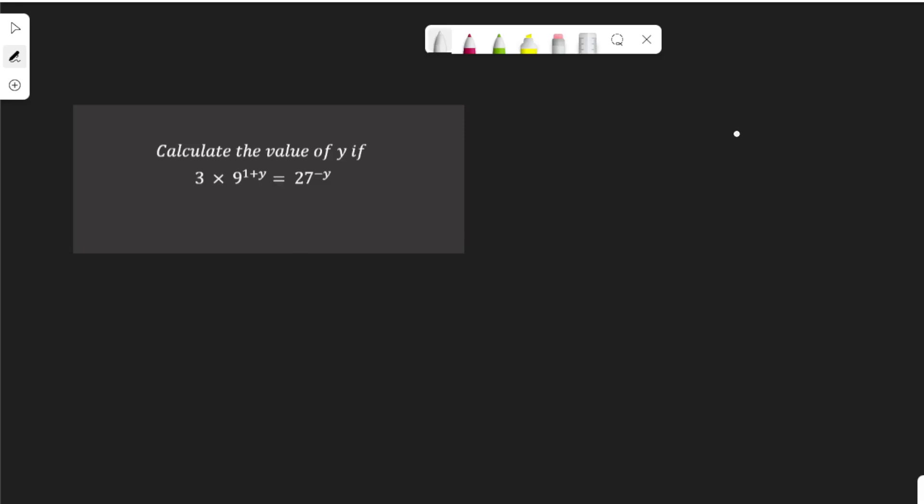Calculate the value of y if 3 times 9 to the power of 1 plus y equals 27 to the power of negative y.